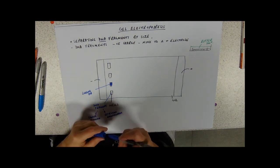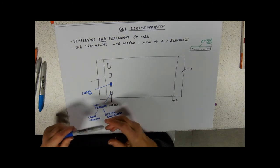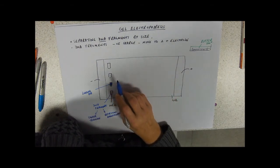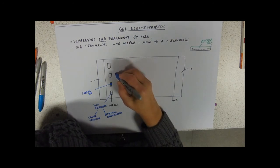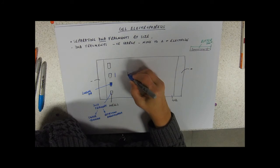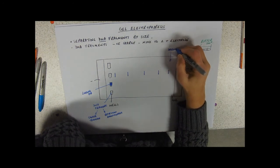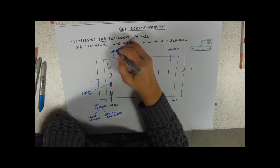So as you switch on the current, your DNA fragments are going to move. And the bigger ones find it harder to squeeze through the gaps in the gel. So what you get is a separation of your DNA fragments by size. The ones that move furthest are the smallest, and the ones that move less far are the largest, or the longest.